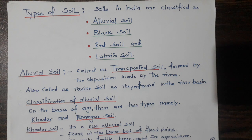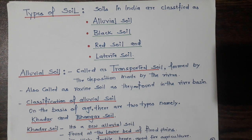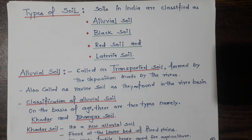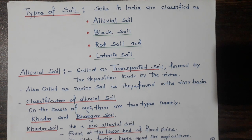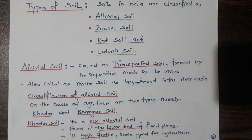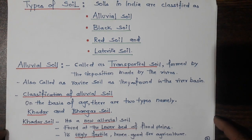Now, let us classify the different types of soil as far as the Indian subcontinent is concerned. There are four types of soil, namely alluvial soil, black soil, red soil and laterite soil. In the order of importance, it is the alluvial soil which is very important and that covers most parts of the land area in India.